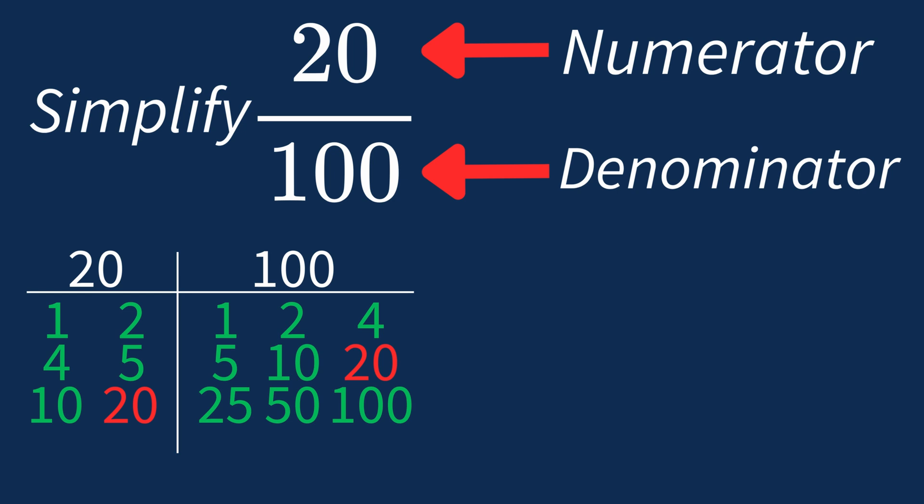This means we can divide both the numerator and denominator by 20 to simplify the fraction. Dividing the numerator 20 by 20 gives us 1. Dividing the denominator 100 by 20 gives us 5.